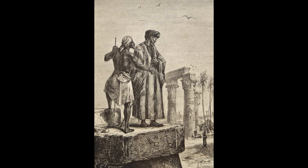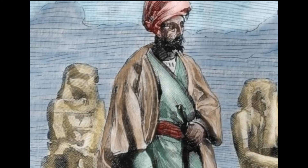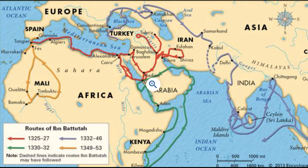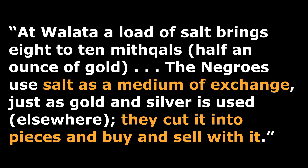There was an account of a man called Ibn Battuta who documented his experience of traveling. Ibn Battuta was a Muslim traveler born in Morocco in North Africa. He documented people he encountered in his travels and his observations about how the Afro-Eurasian world connection had expanded in the 14th century. According to Ibn Battuta, he wrote: 'At Walata, a load of salt brings eight to ten mithqals — that means half a handful of gold. The Negroes use salt as a medium of exchange just as gold and silver is used elsewhere; they cut it into pieces and buy and sell with it.'